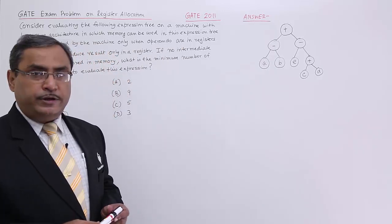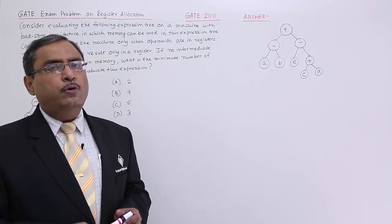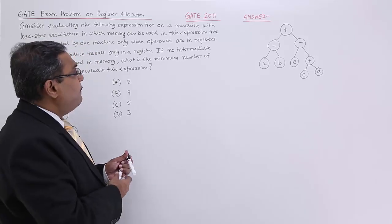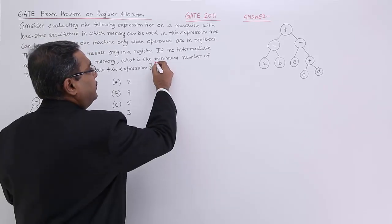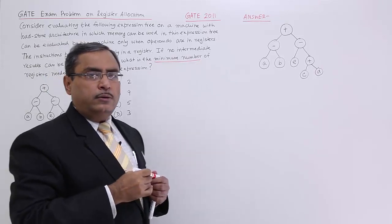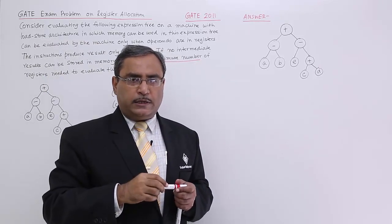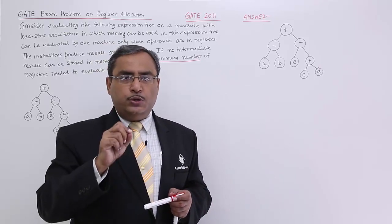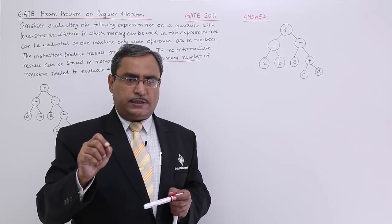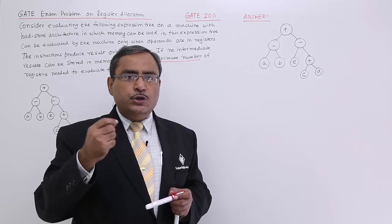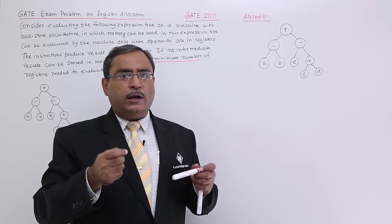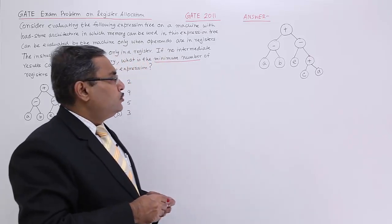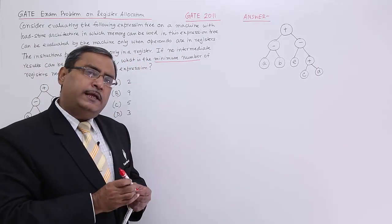I have drawn the same expression tree here for the solution. It has been mentioned that what is the minimum number of registers required. When writing the respective code against this particular expression tree, I shall try to use a minimum number of registers. That means I can reuse my registers if one is getting free — if one is available or free, I can reuse that one.